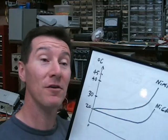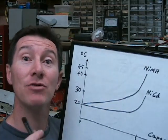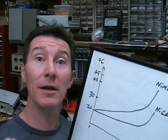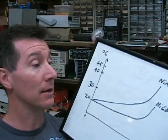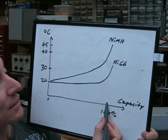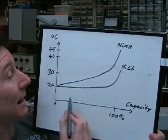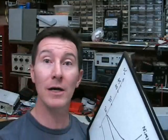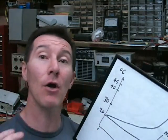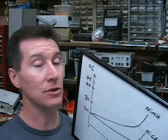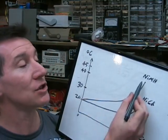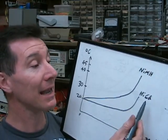The third detection method for end of charge is measuring the temperature. Because NiCad and nickel metal hydride batteries, they both increase in temperature very sharply once they get to 100% capacity, as you can see here. Now, nickel metal hydride are what's called, have an exothermic charging reaction.